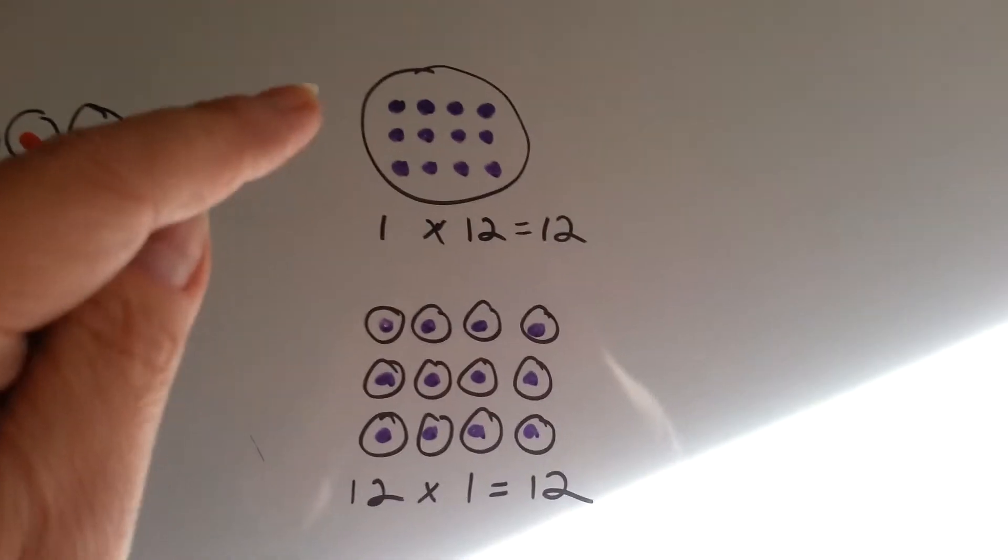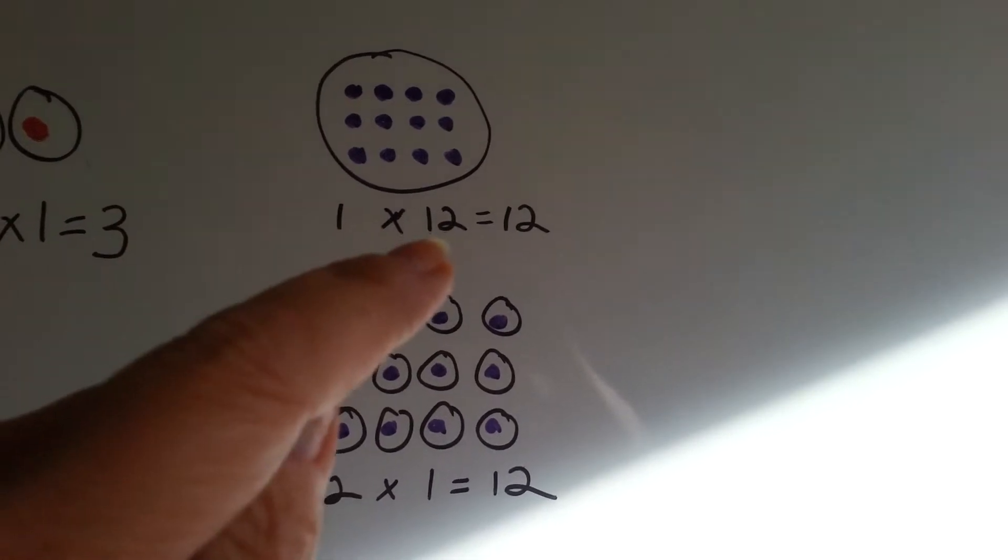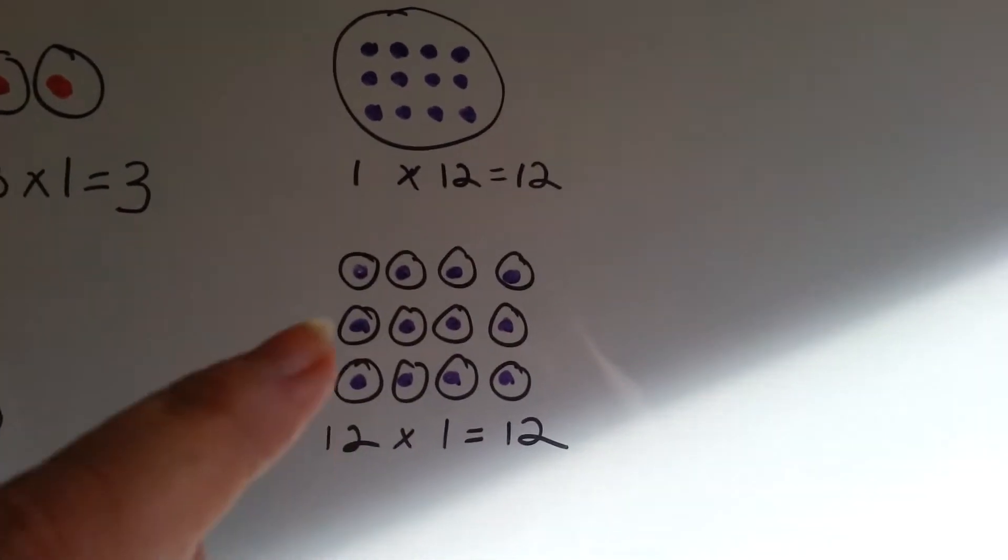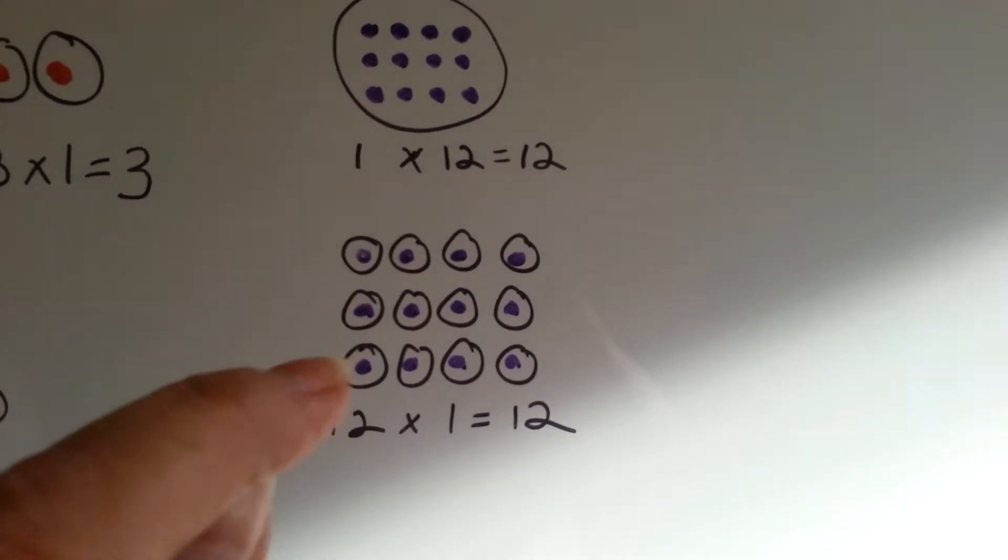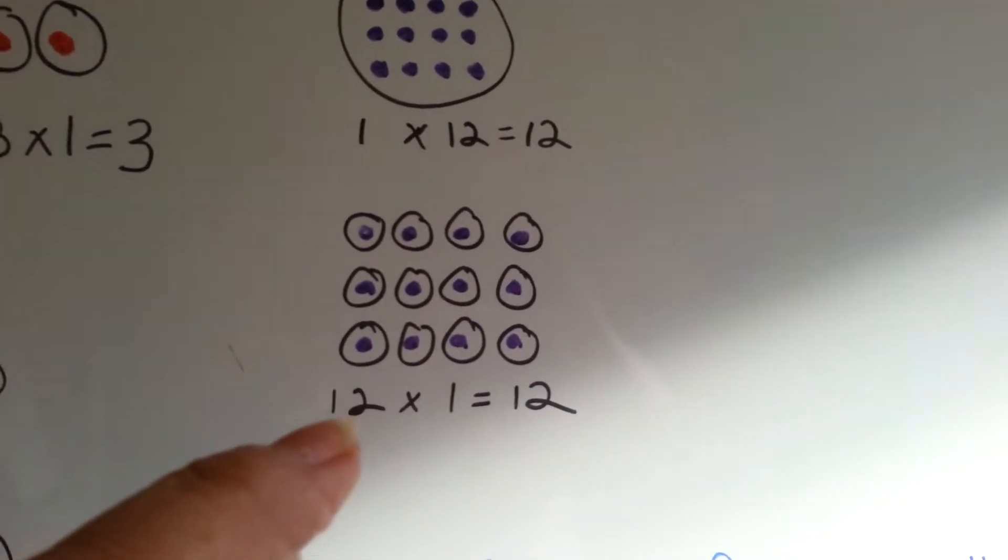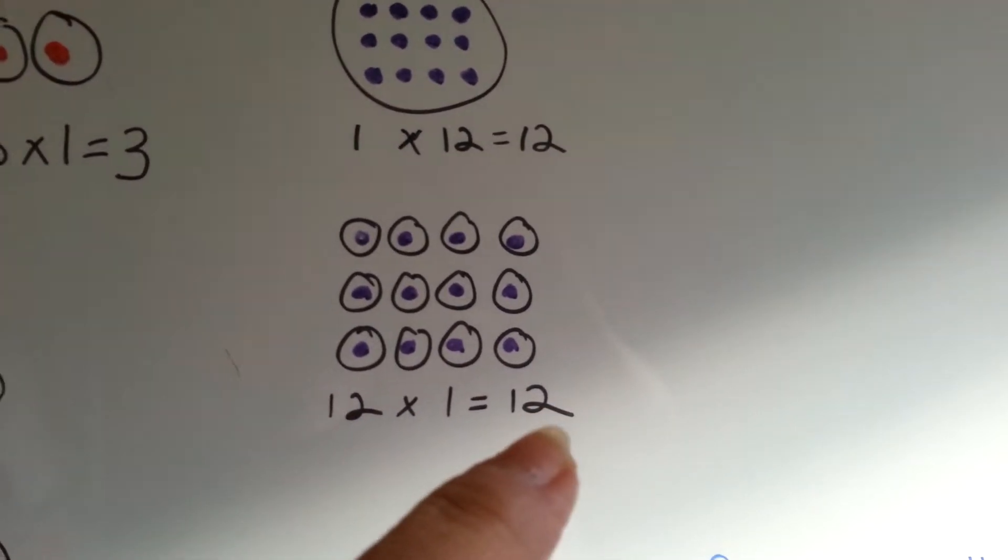Let's look at this one. Twelve dots one time in a circle. One times twelve equals twelve. Now we have twelve circles with one little dot in it. It's still twelve. If you have one dot twelve times, you still have twelve.